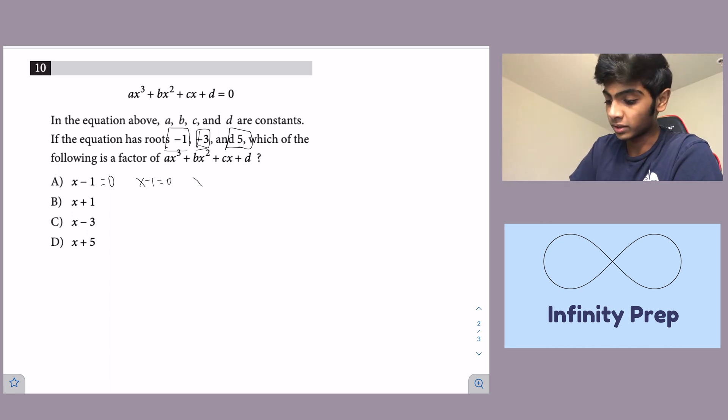So all we have to do is set this equal to 0 and solve for x. So if x minus 1 equals 0, then we know that x is equal to 1 because we're just adding 1 to both sides to isolate x.